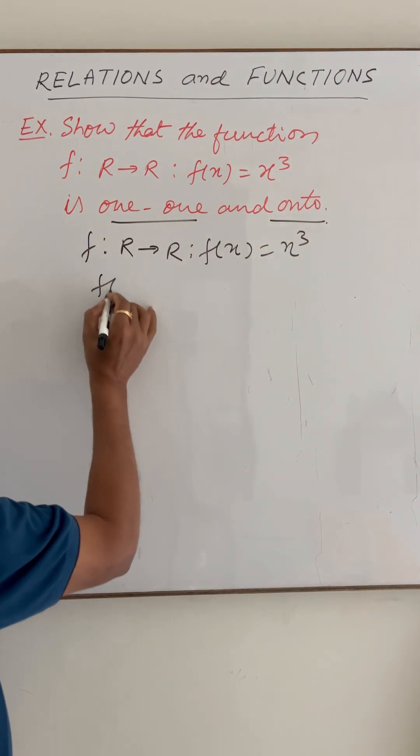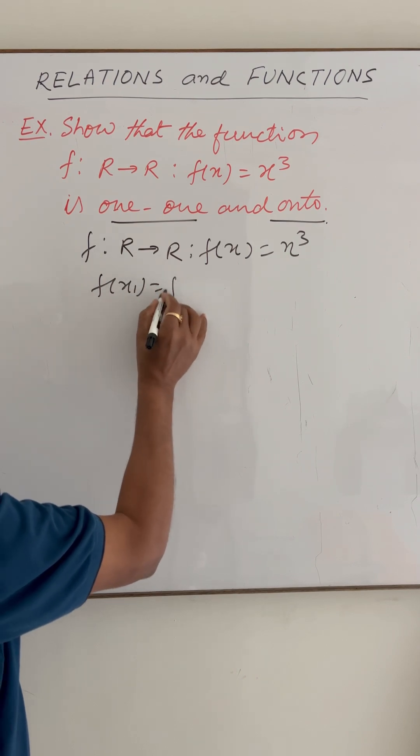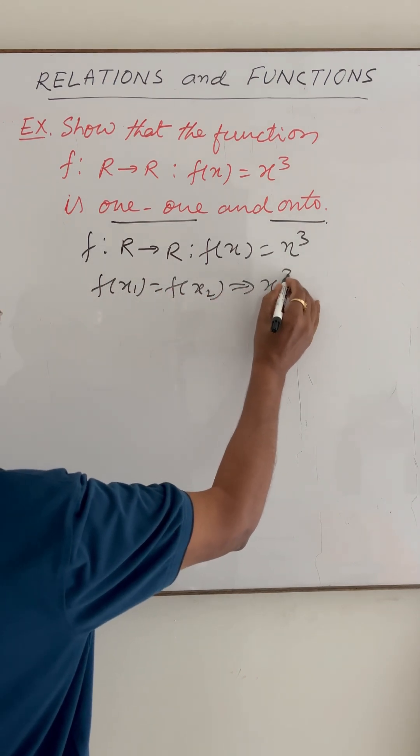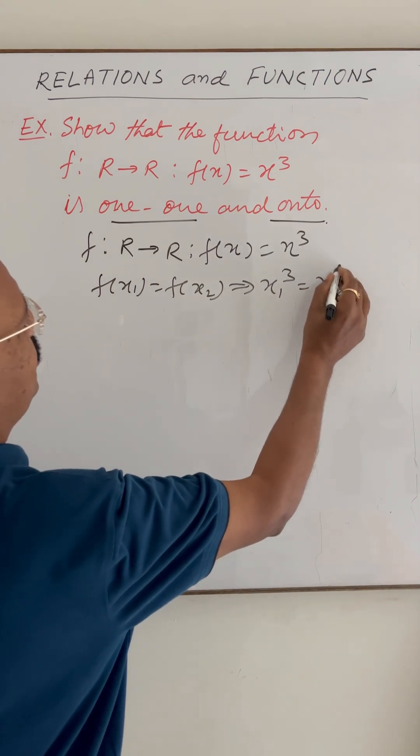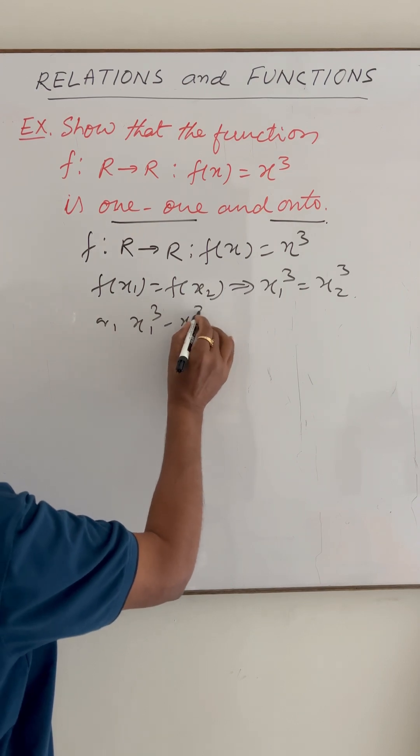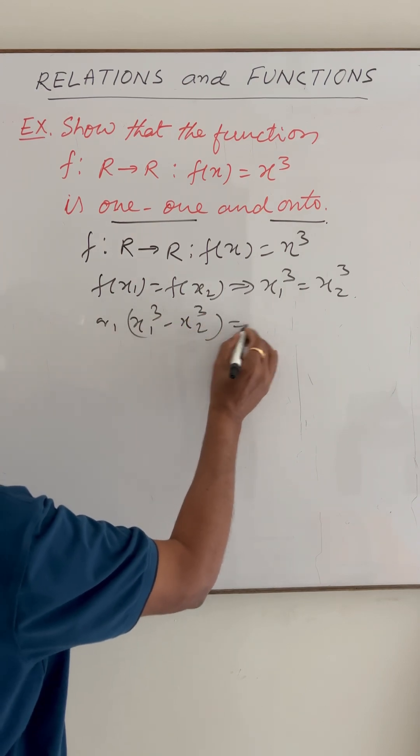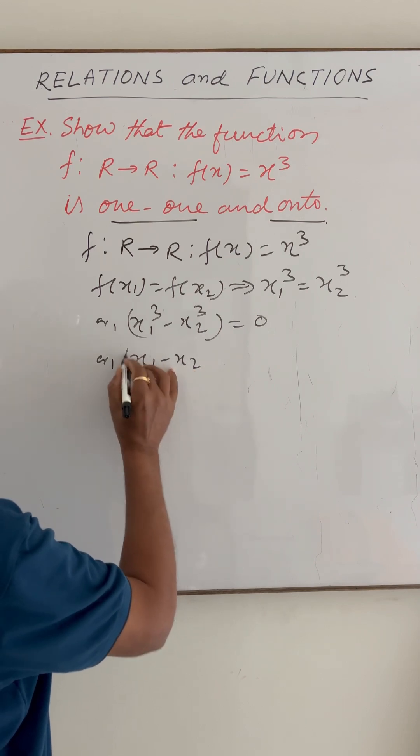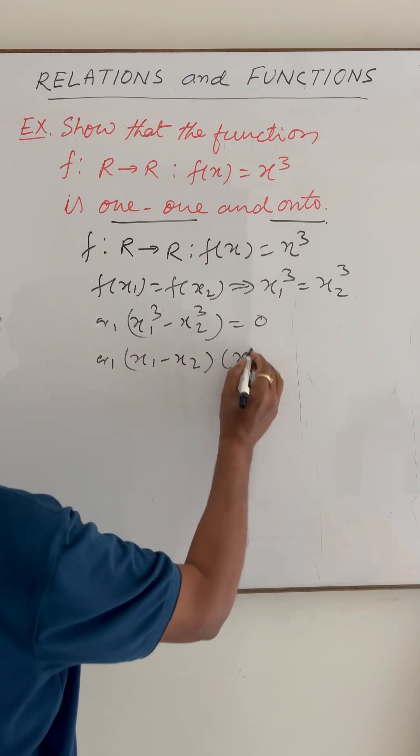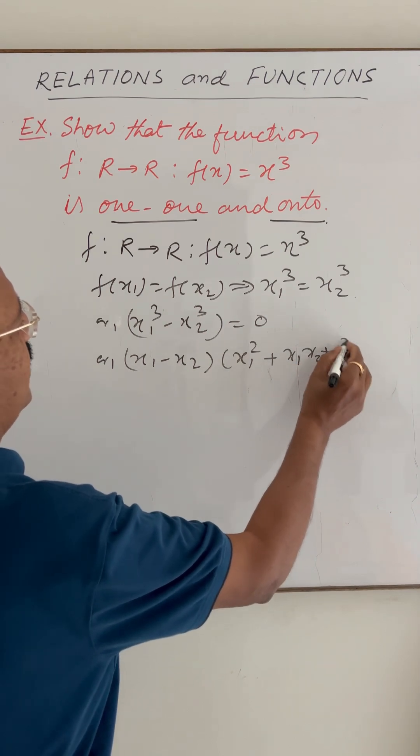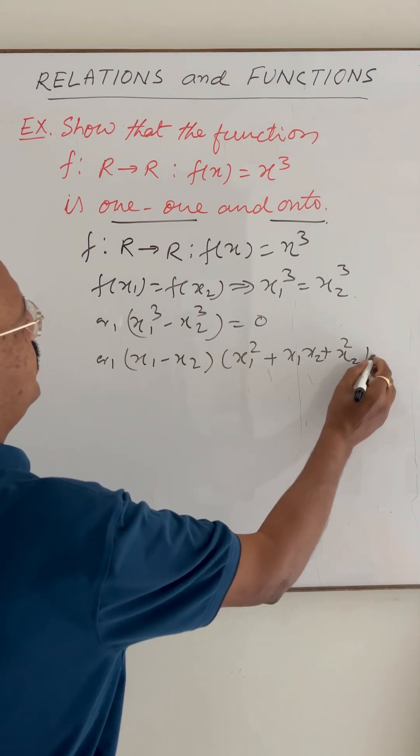So f(x₁) is equal to f(x₂) implies that x₁ cube is equal to x₂ cube, or x₁ cube minus x₂ cube is equal to zero, or x₁ minus x₂ into x₁ square plus x₁x₂ plus x₂ square is equal to zero.